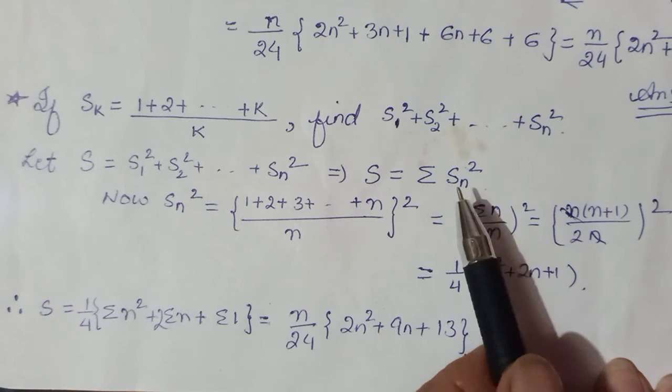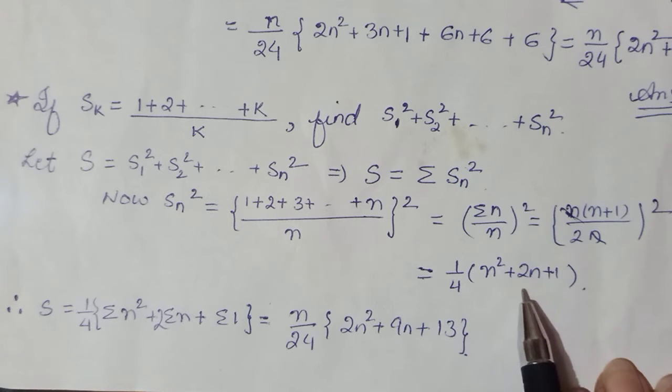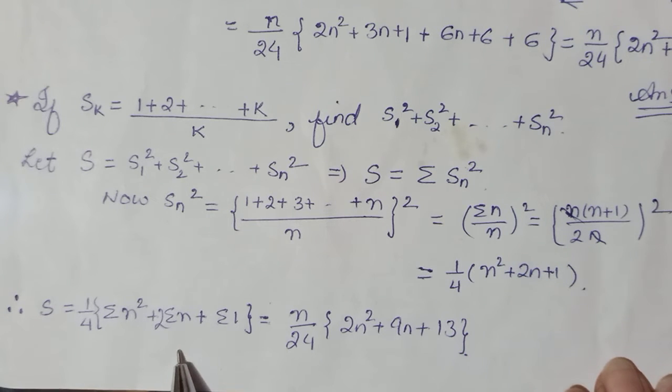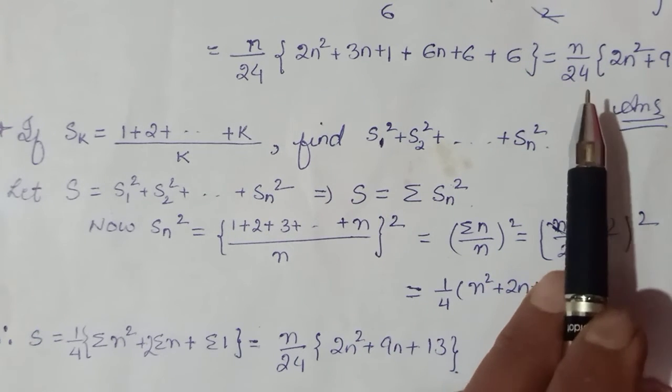So now naturally we will put this to sigma notation to be able to find the sum. Pehle humne Sn apna simplify kar liya, nth term simplify kar diya jo tha Sn ka square. Ab isko hum sigma notation melhenge. So 1/4 scalar will come out: Σn², 2Σn. See, coincidentally this expression is exactly same as what we got here above.